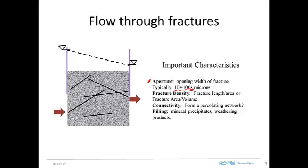One millimeter is equal to a thousand microns, so fractures of tenths of a millimeter are fairly typical for fairly conductive fractures. Just for reference, a piece of paper is about 75 microns thick.